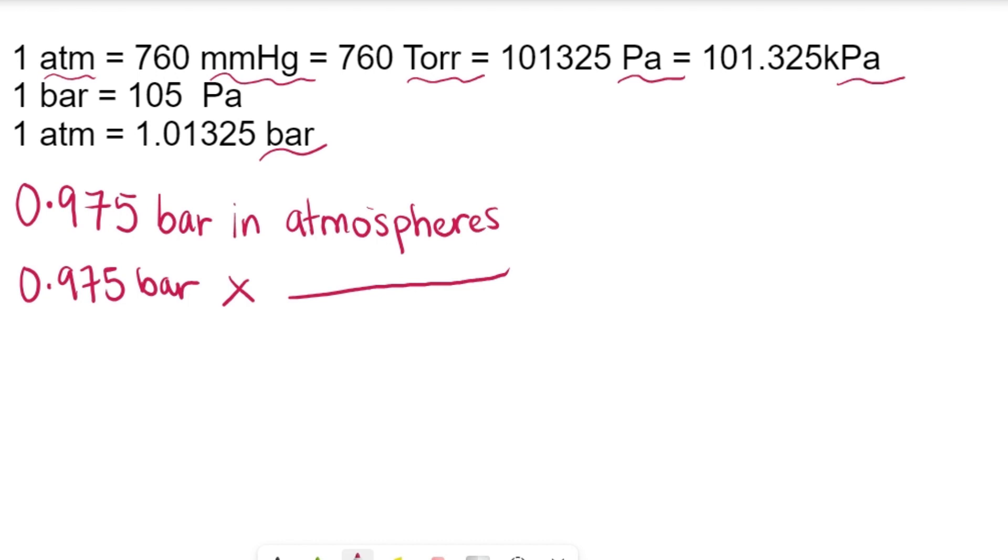You have 0.975 bar times a fraction. We're going to have atmospheres because that's what we're trying to convert to, and we're going to have the denominator units be bar because we want a situation where the bars can cancel out and the units of atmospheres is what we're going to have our answer in.